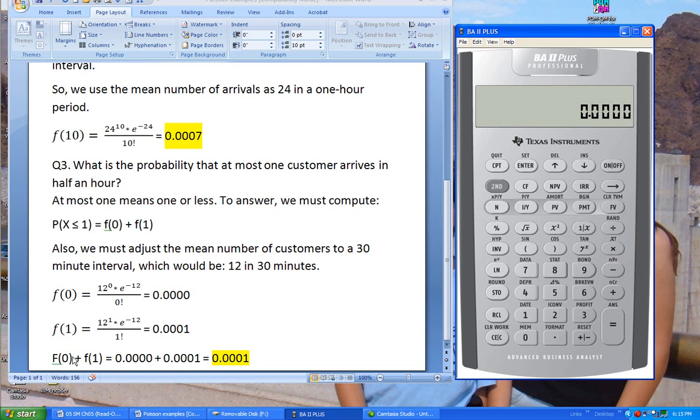So to answer the question, probability that x would be less than or equal to one, or in other words, one or fewer customers arrive in a half hour period would be 0.0001 when you add up f of zero and f of one. Thank you.